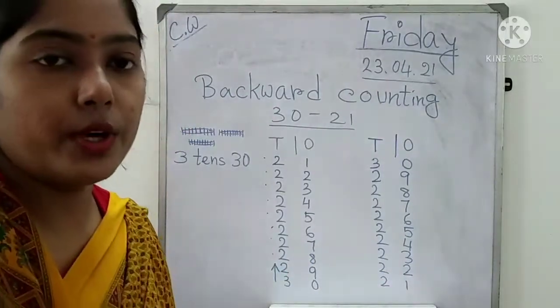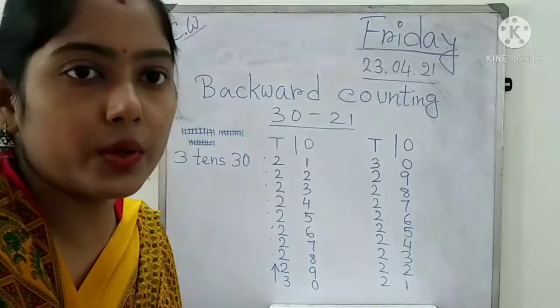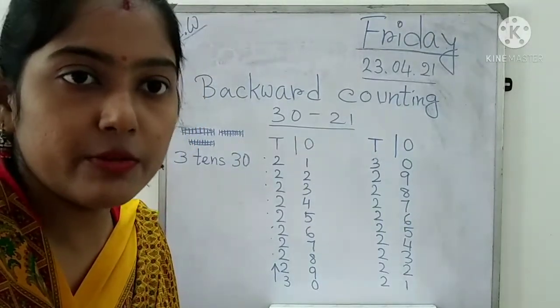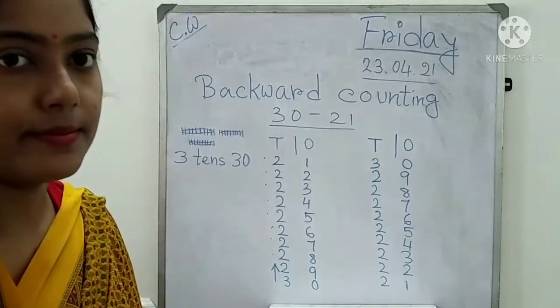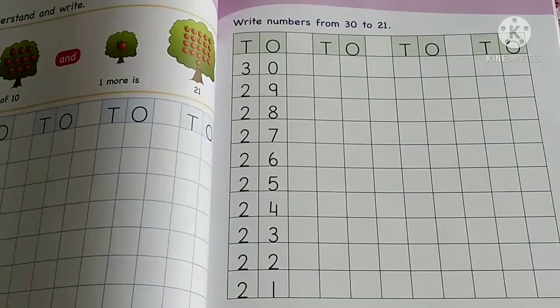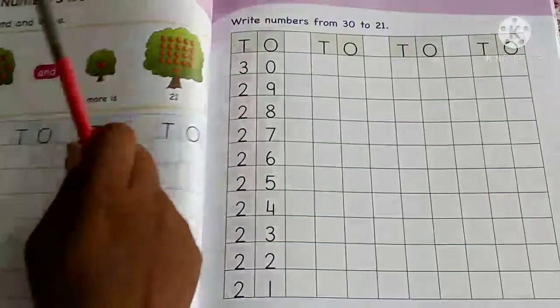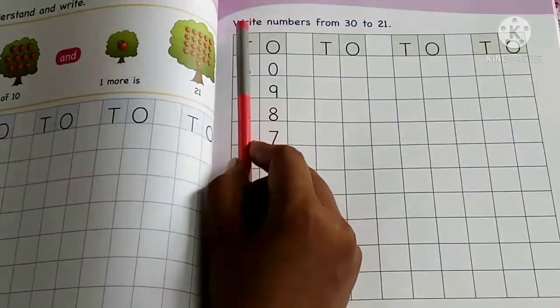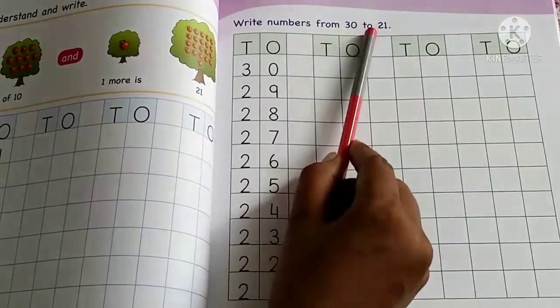Now we are going to write the backward numbers in our math book. So everyone be ready with your math book, pencil, and eraser. Everyone take out page number 39. Here you will see the heading, write numbers from 30 to 21.